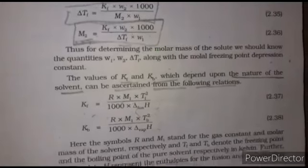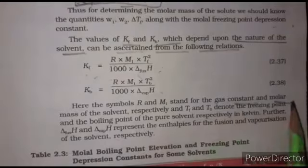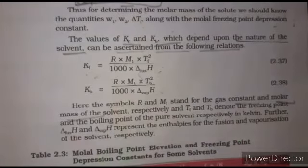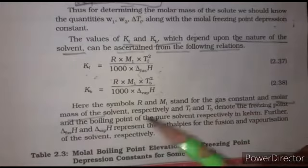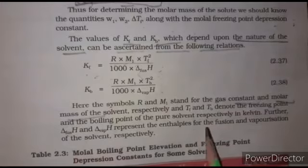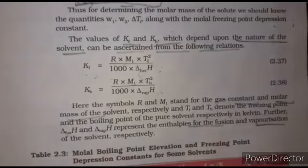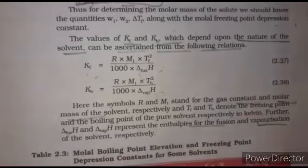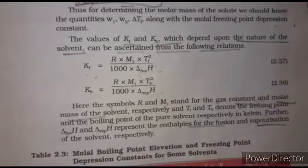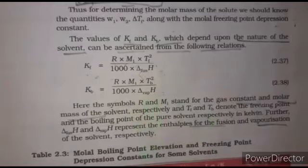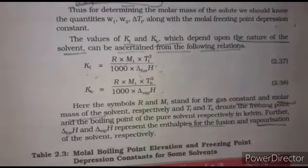Here R is 8.314 J/mol·K. Tf and Tb denote the freezing point and boiling point of the pure solvent in Kelvin. The corresponding formula for Kb uses the enthalpy of vaporization and boiling temperature. In this way we can calculate Kb and Kf for a particular solvent if we know the enthalpy of fusion and the freezing temperature of that solvent.